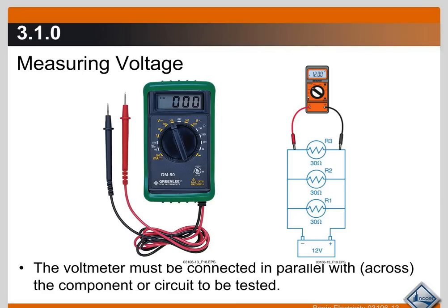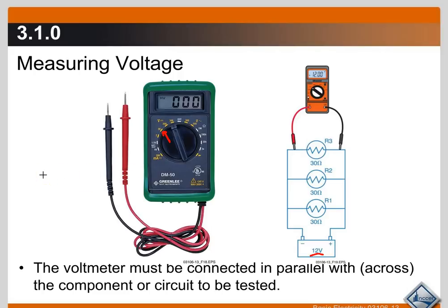With your volt-ohm-milliammeter, it doesn't really matter which one you have — they all work the same way. The first thing to note when measuring voltage: in this example of a 12-volt DC circuit, you need to set your voltmeter to the range one step higher than your voltage source. Since this is a 12-volt DC source, rather than setting it at 300, you'd set it down at 20 — that gives you the most accurate voltage readings.